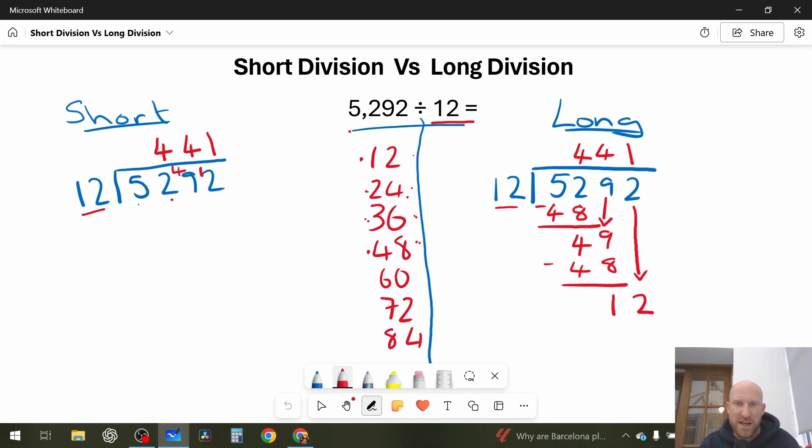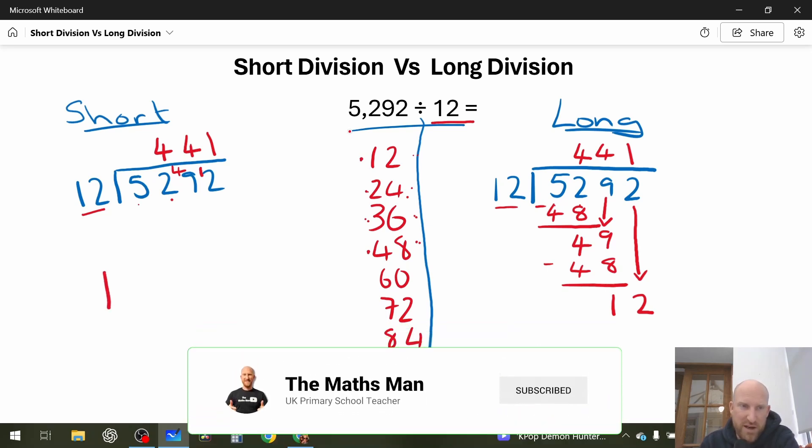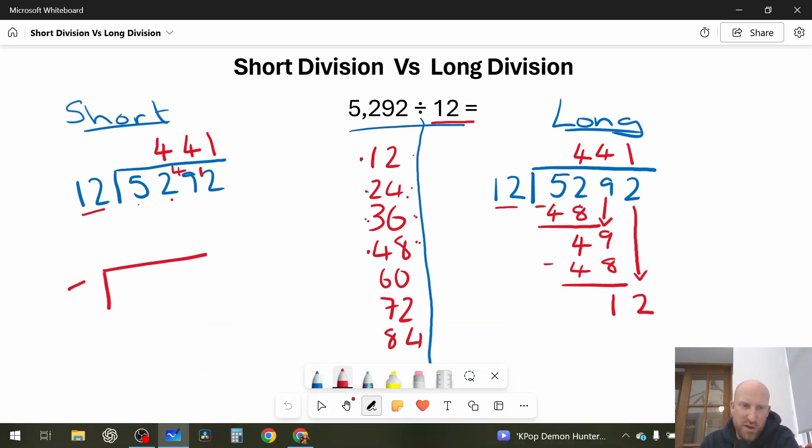But let's finish this video by saying, when should you use short division, and when should you use long division? Now, what I would say to that is, I would use short division if I am dividing by a one-digit number. So, if I was doing 392 divided by 5, I would choose short division method.